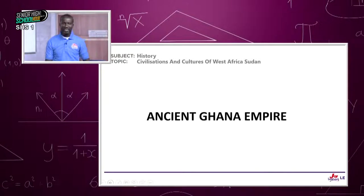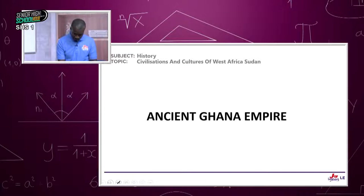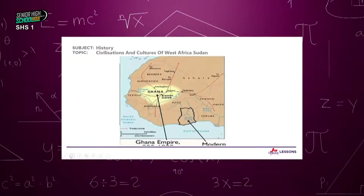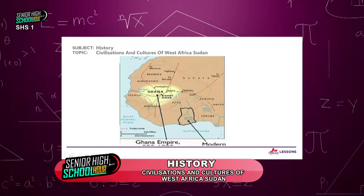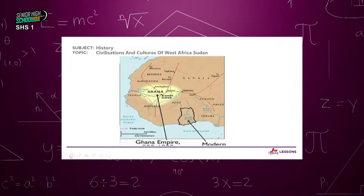Now we look at ancient Ghana empire. On the map you can see the Ghana empire alongside present-day Ghana. The old Ghana empire is situated around what is Mali today. The capital was Kumbi Saleh.